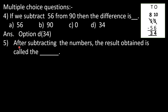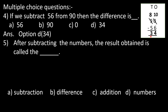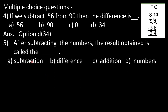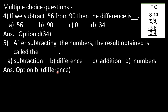Question number 5: after subtracting the numbers, the result obtained is called the dash. When we subtract two numbers, the result obtained is called the difference. Options: subtraction, difference, addition, numbers. The correct option is B, difference.